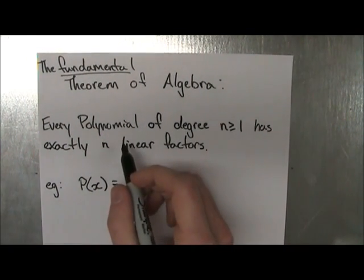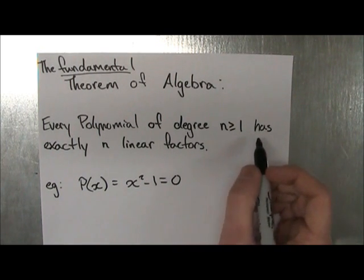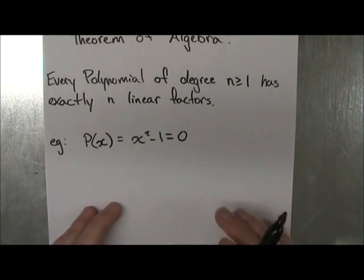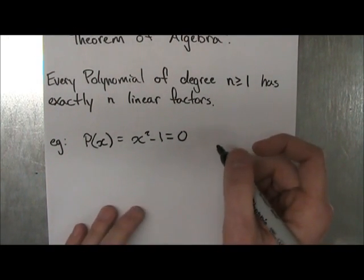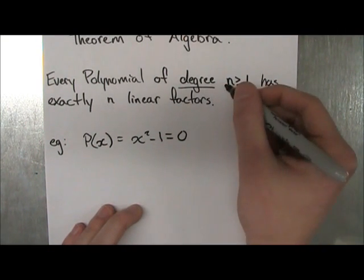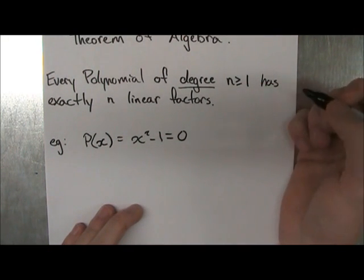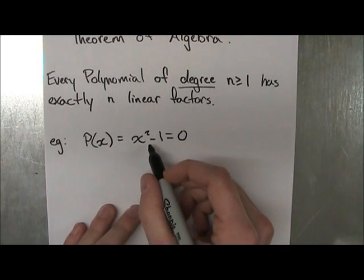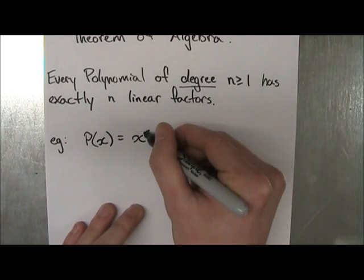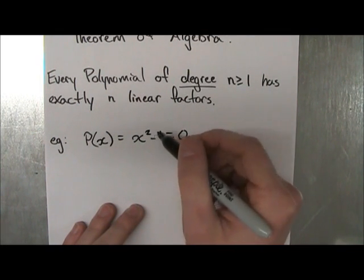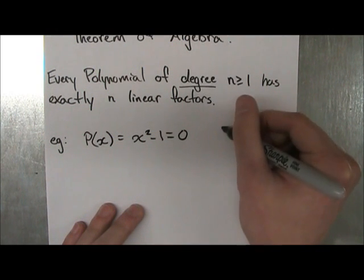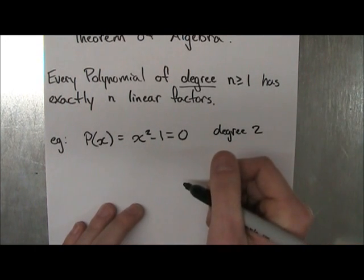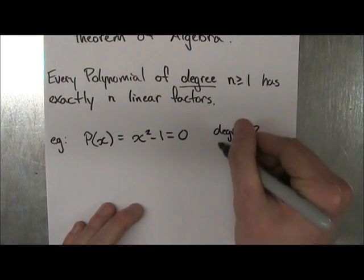And it states that every polynomial of degree n greater or equal to 1 has exactly n linear factors. Okay, so I put down an example to help demonstrate what this means. If you don't know, degree is a synonym for the highest power in your polynomial. So if we look at our example here, the highest power we have is 2. So that has to be our degree. So this is a polynomial of degree 2.